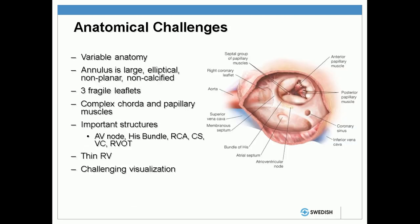There are a number of anatomical challenges when considering the transcatheter methods. Number one, the anatomy is highly variable. The annulus is large, elliptical, non-planar, and non-calcified, so for a landing zone this is challenging. There are three fragile leaflets which tend to be more fragile than the mitral. The complex cordal structures and papillary muscles are even more complex than the mitral side. There are also a number of very important structures around the tricuspid annulus: the AV node bundle of His, right coronary artery, the coronary sinus, the vena cava, as well as the RVOT. Compared to the LV, the RV is very thin, and there's challenging visualization because we're just not as used to looking at it as we are the mitral valve.